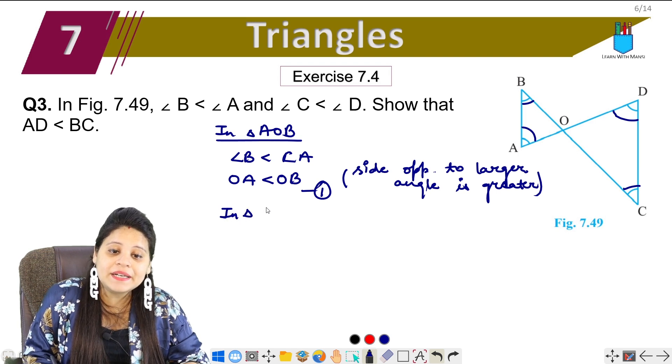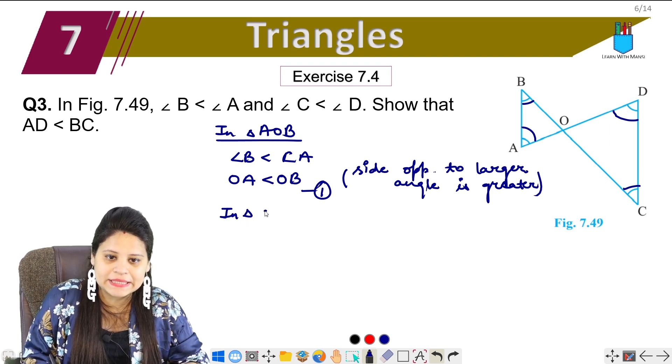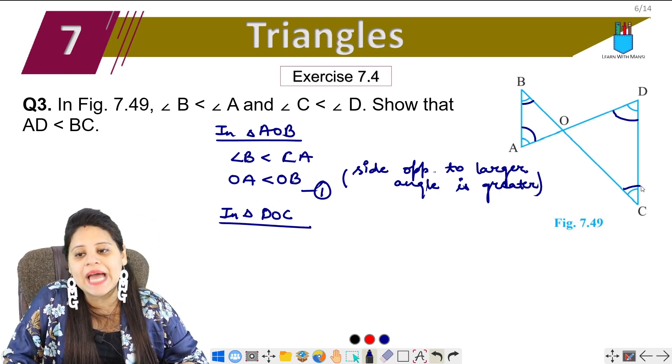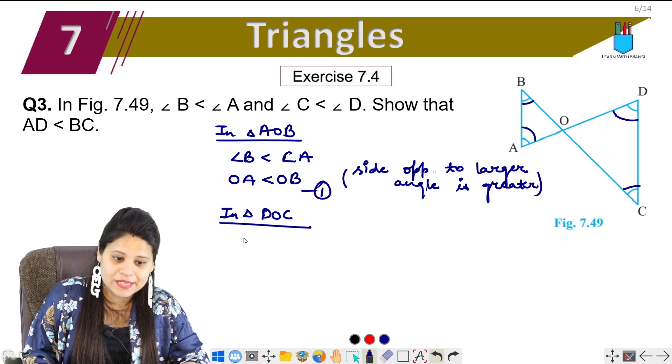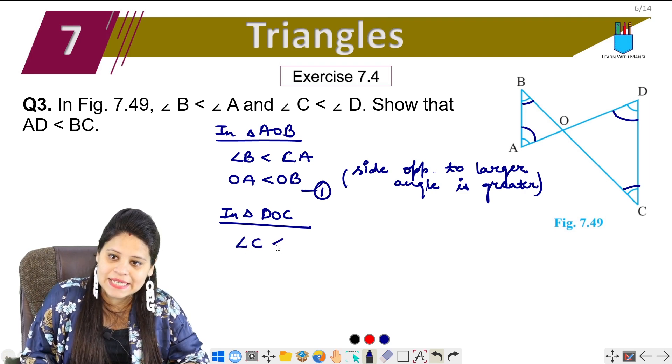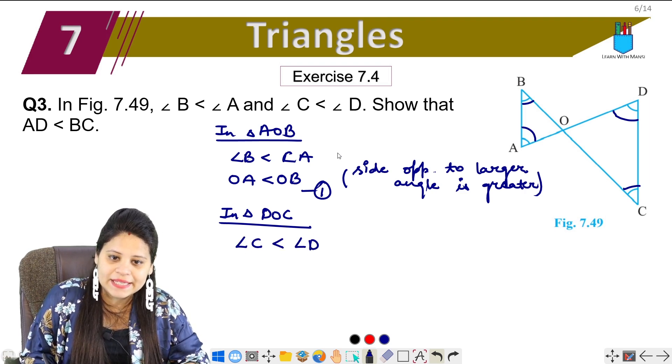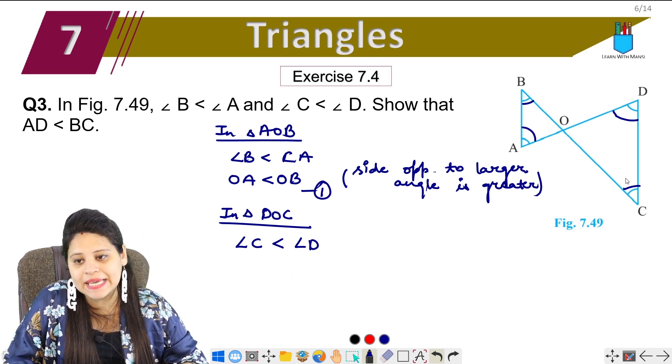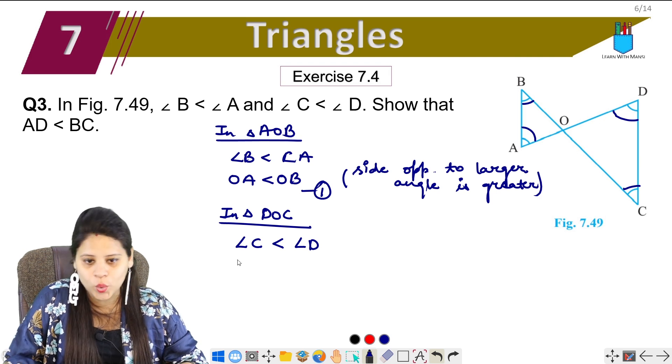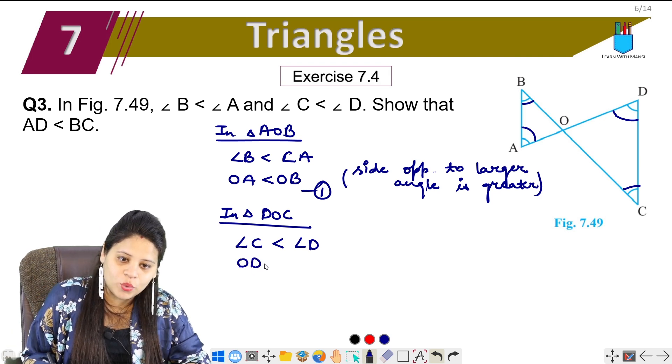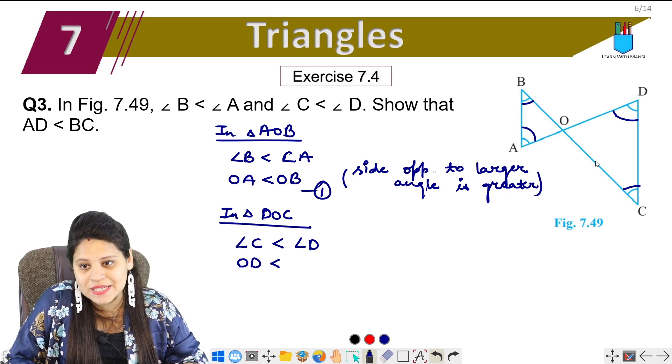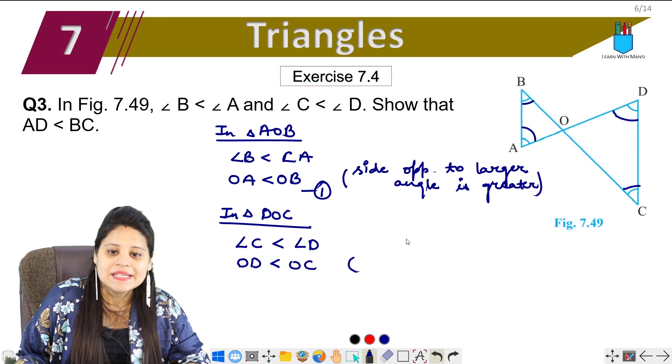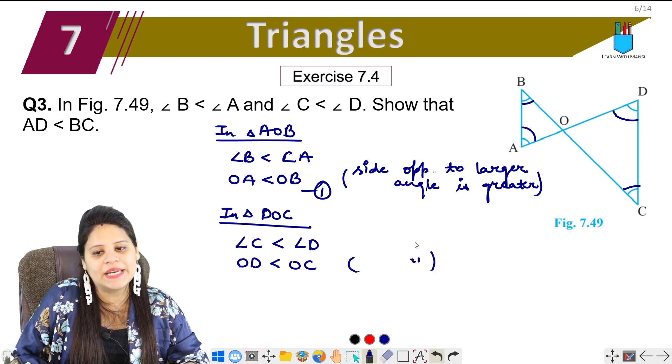Similarly, in triangle, let's talk about big triangle DOC. If I talk about this triangle, then angle C is small, that means angle C is smaller than angle D. Which is angle C's opposite side? OD. That means OD is smaller. Angle D's opposite side is OC. So OC. Same here, the same reason.